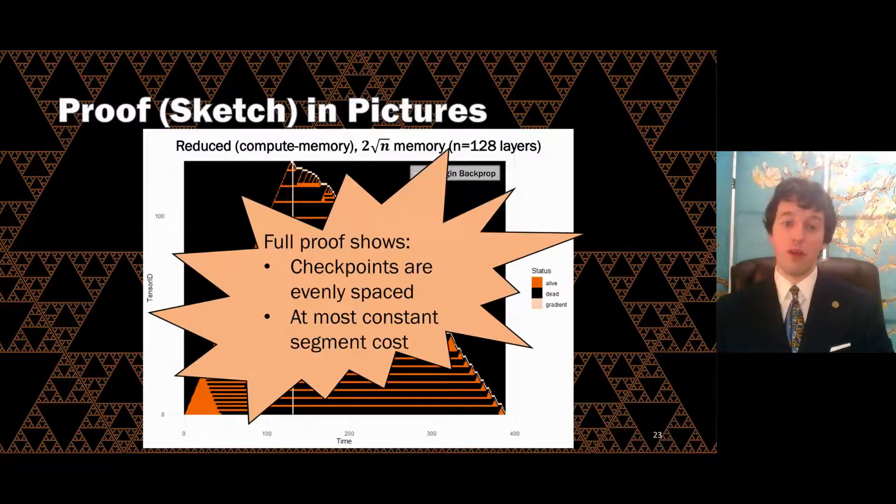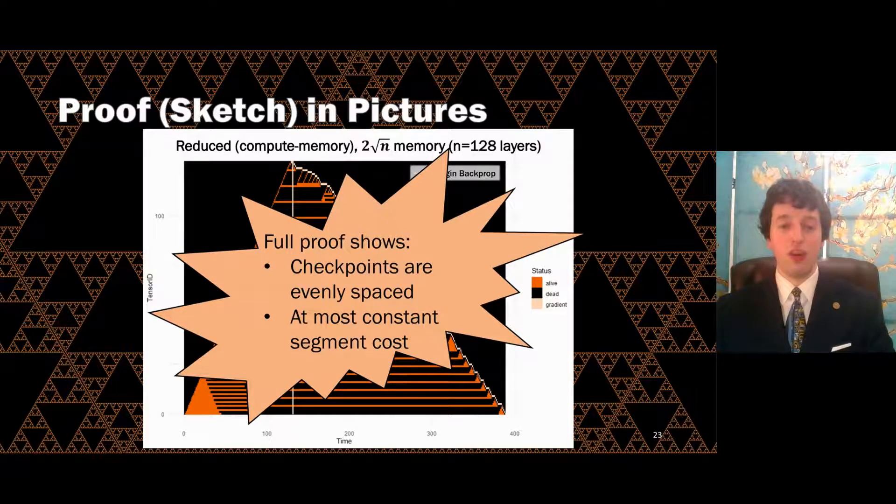The horizontal lines correspond to long-lived checkpoints, and the filled-in triangles correspond to recomputing segments between checkpoints. I encourage you to consult the full proof for an argument that the checkpoints between these segments will be of a bounded distance from each other, and that the cost of each segment can be bounded by a constant, which is what allows us to conclude that the overall costs will be linear.